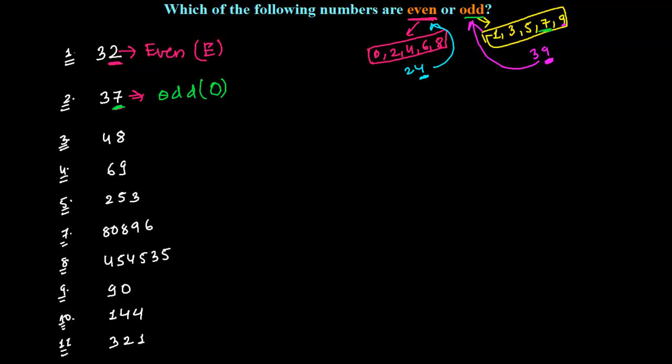Now 48, see here, 48 is in the group of even numbers. 8 is here, so that's why this is an even number.